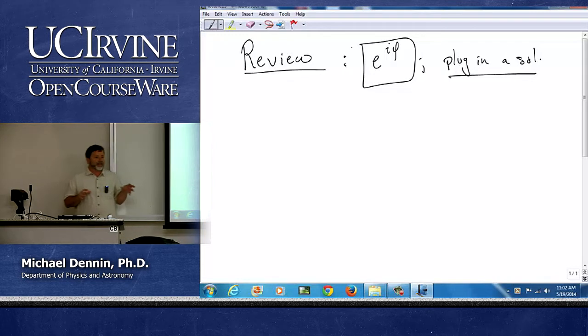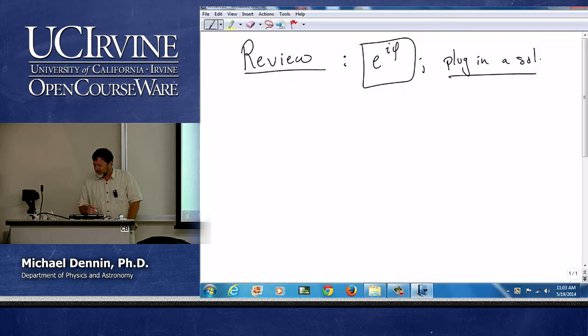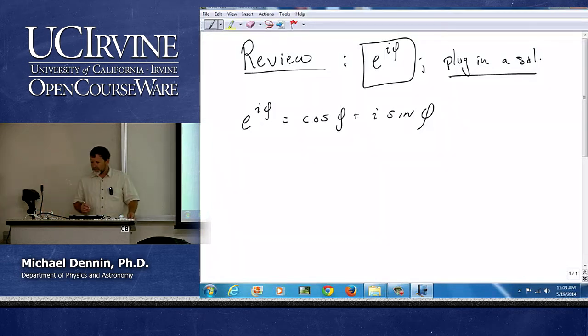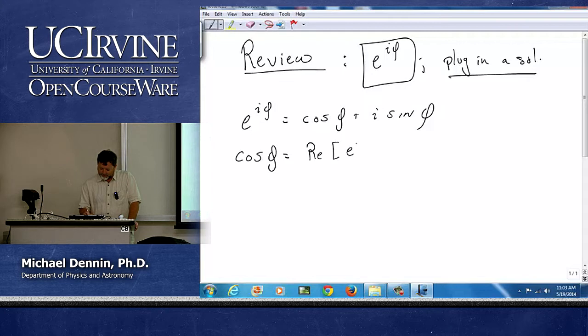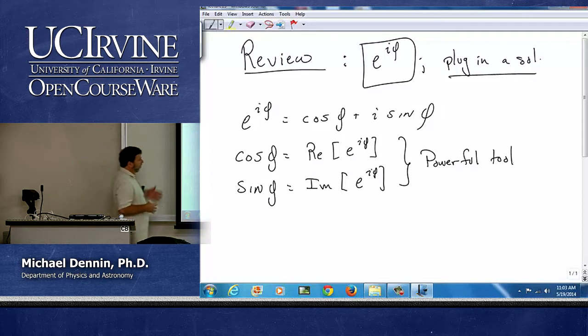And one of the things that I obviously did not emphasize enough in the first lecture on e to the i theta is there are basically five facts you just need to have memorized if you're going to go forward in physics and memorized to the point that it's just ingrained in your system, that you automatically think of these things. One of the key things you'll notice is if I'm thinking in terms of complex numbers, an incredibly powerful tool is that cosine is the real part of e to the i phi, and sine is the imaginary part of e to the i phi.